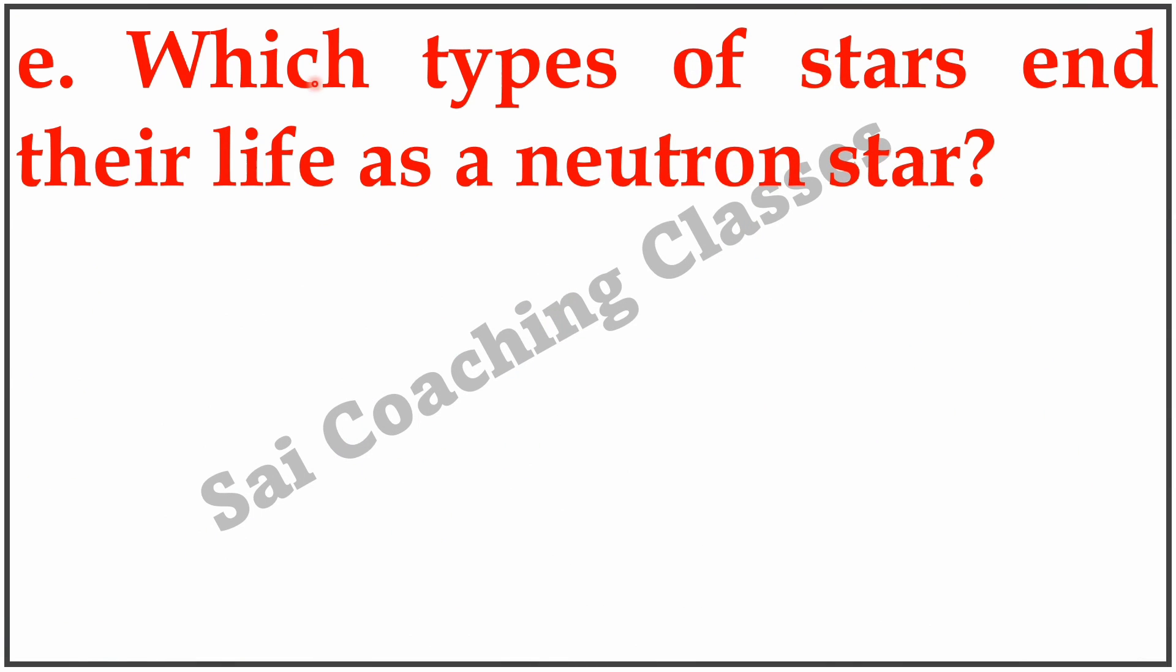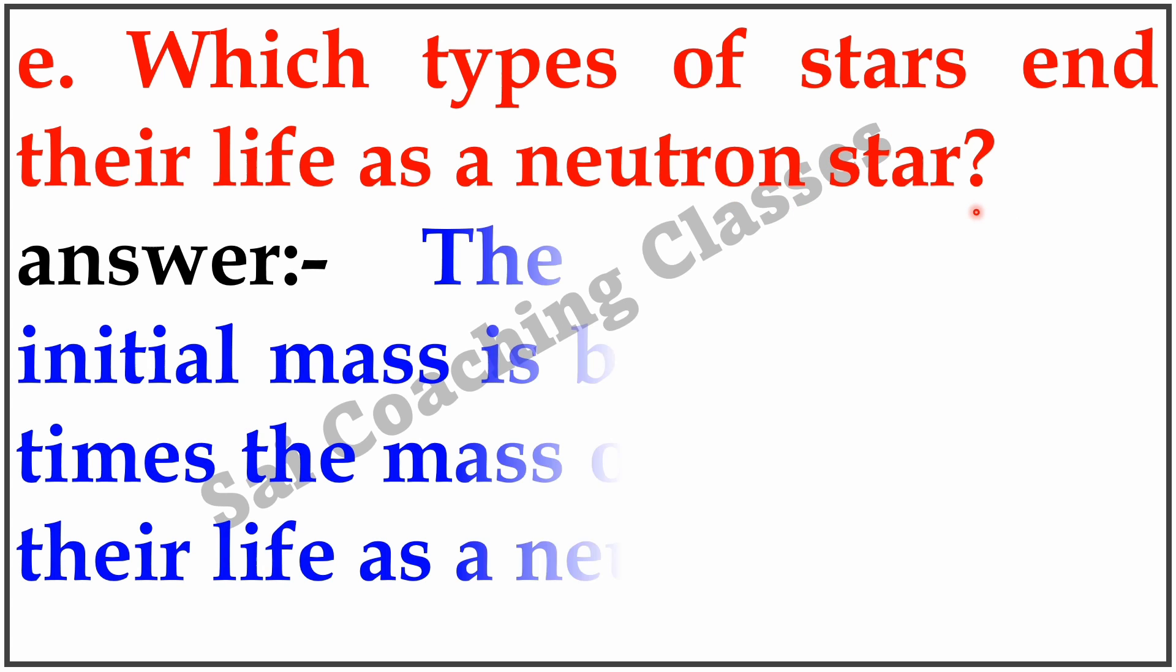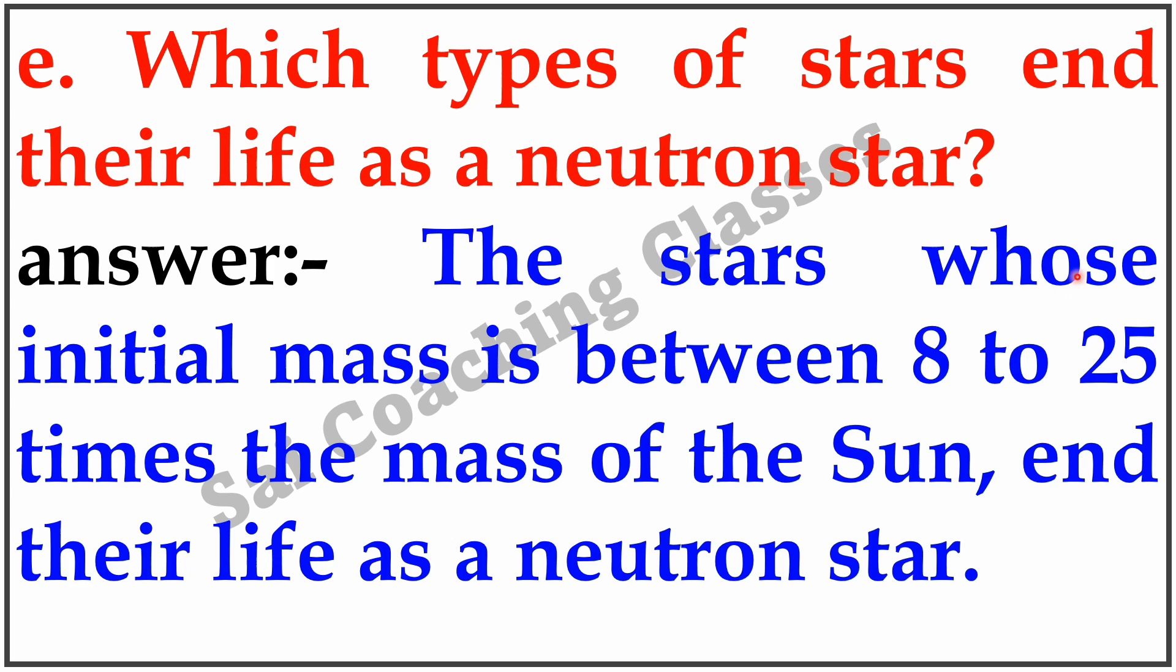E. Which type of stars end their lives as a neutron star? Answer: The stars whose initial mass is between 8 to 25 times the mass of the sun end their lives as a neutron star.